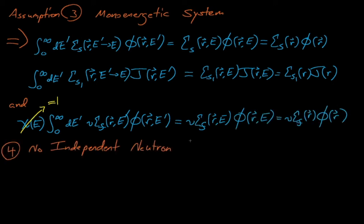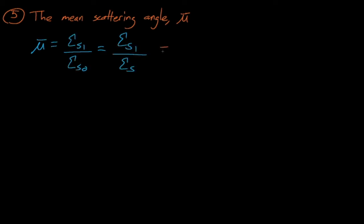Next, we'll assume that our system has no independent neutron sources, which means that the S0 and S1 terms are both equal to zero. This assumption is pretty reasonable in a nuclear reactor, even though we might see some independent sources of neutrons due to neutrons emitted from cosmic ray production or from our Californium-252 startup source in the reactor. These independent neutron sources generally pale in comparison to the reactor's full power neutron fission source. Lastly, we'll assume that the mean neutron scattering angle equals the ratio of the first and the zeroth moment of the double differential scattering cross-section.